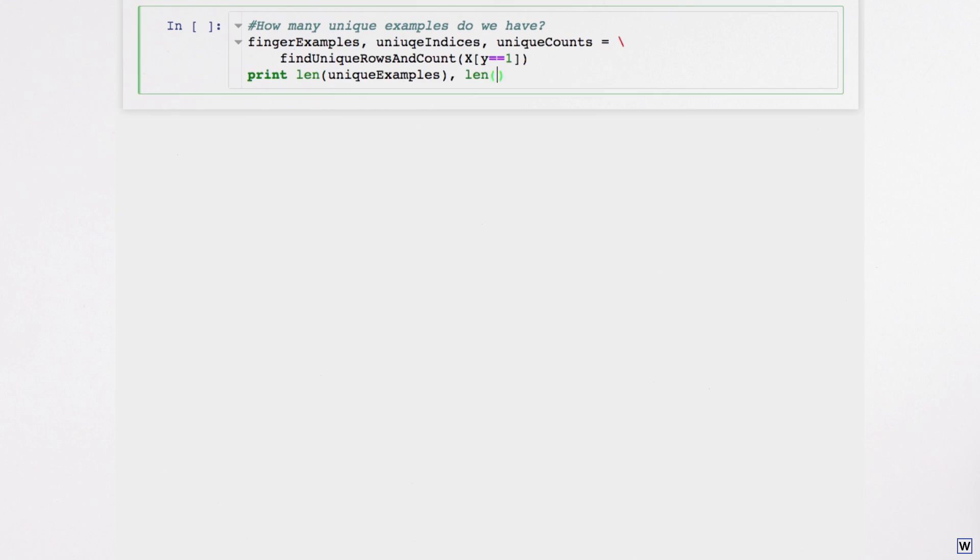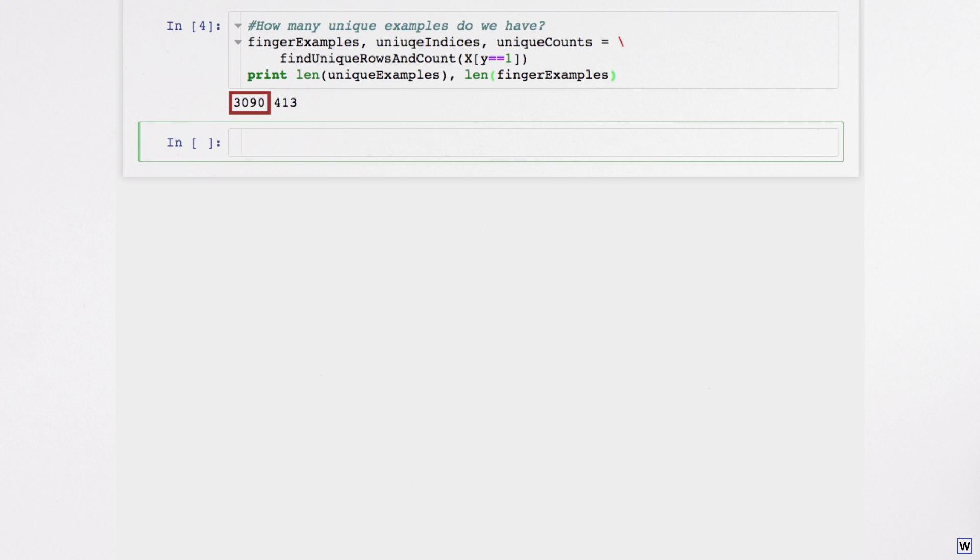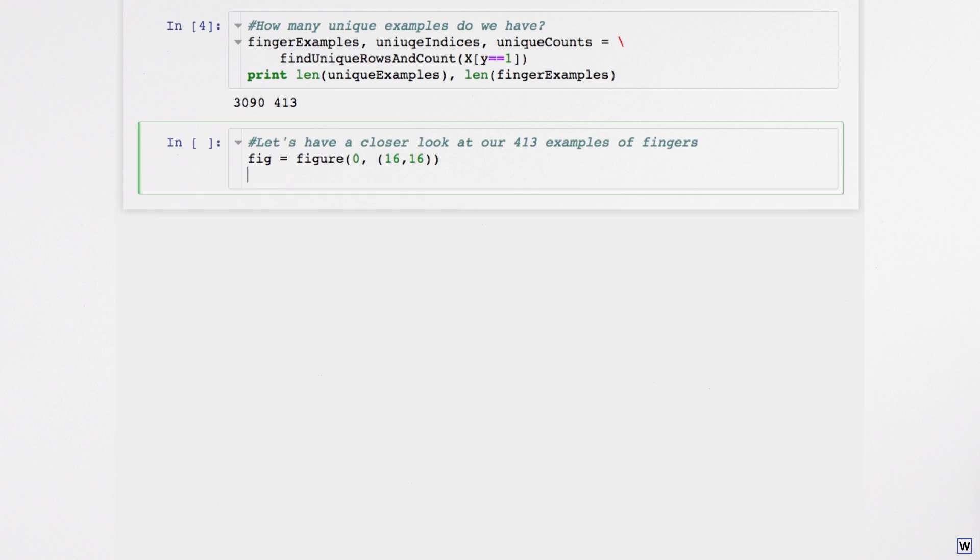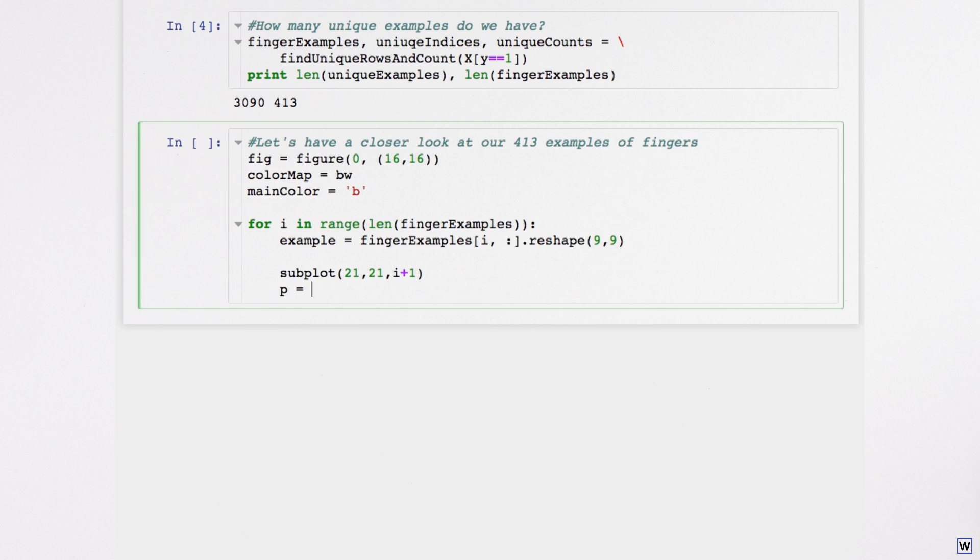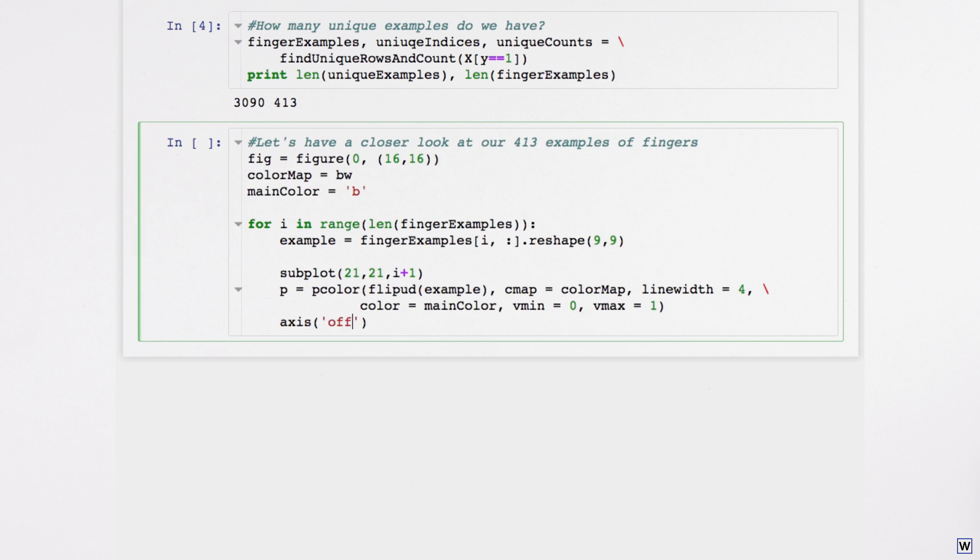After removing the redundancies, we have 3,090 unique examples, and 413 of these examples show fingers. Our 413 finger examples should be pretty useful to us, because we know they correspond to actual fingers in actual images. If a new example matches one of our 413 finger examples, we'll call it a finger, otherwise we won't.